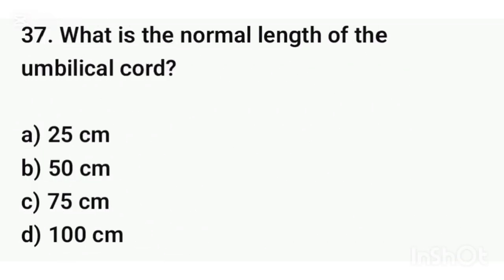Question number thirty-seven. What is the normal length of the umbilical cord? The correct answer is option B: 50 cm.